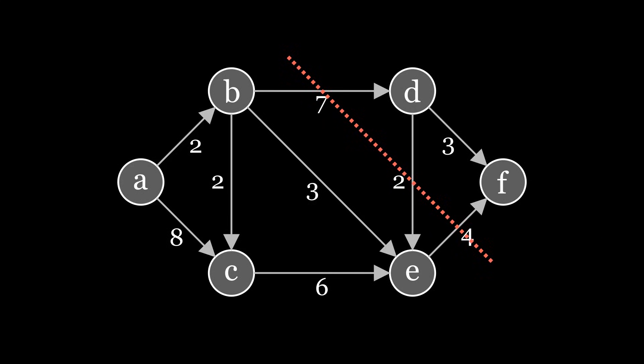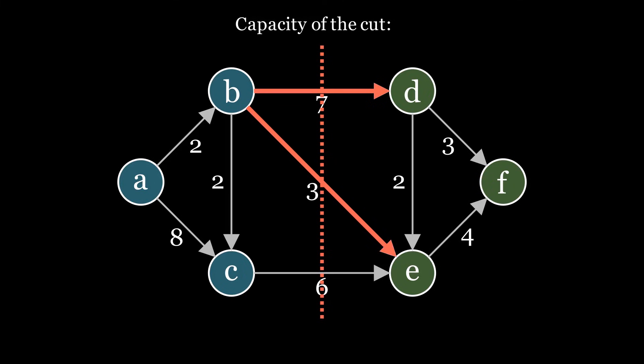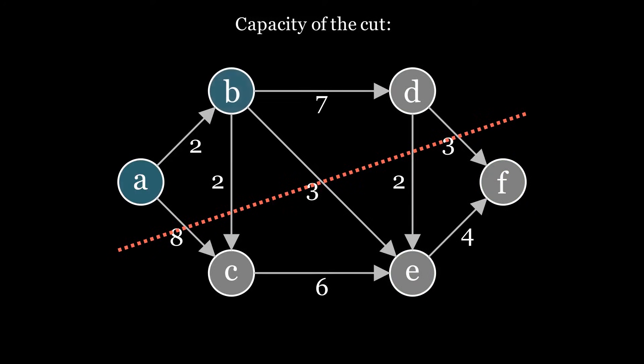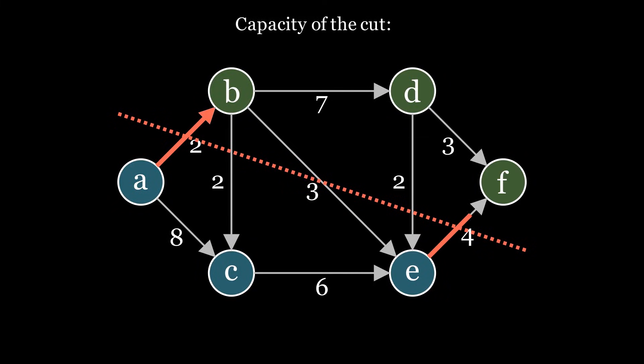Let's introduce the idea of cutting a graph into two subsets, one containing the source and one containing the sink. The capacity of a cut is given by the sum of the capacities of the edges crossing the cut, starting from the partition containing the source. It is possible to cut the graph in different ways. In this context, we are interested in the minimum cut because of the max-flow min-cut theorem that states that the maximum flow is equal to the minimum cut. We can conclude that 6 is the maximum flow possible for this network.